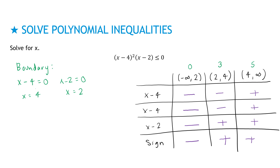I'm looking for less than or equal to 0, meaning negative. Only the first interval — negative infinity to 2 — gives a negative sign, so that's my region. Before writing the solution, I check whether 2 is included. Because the inequality is 'less than or equal to,' 2 can be included. So my solution is negative infinity to 2 with a closed bracket at 2.